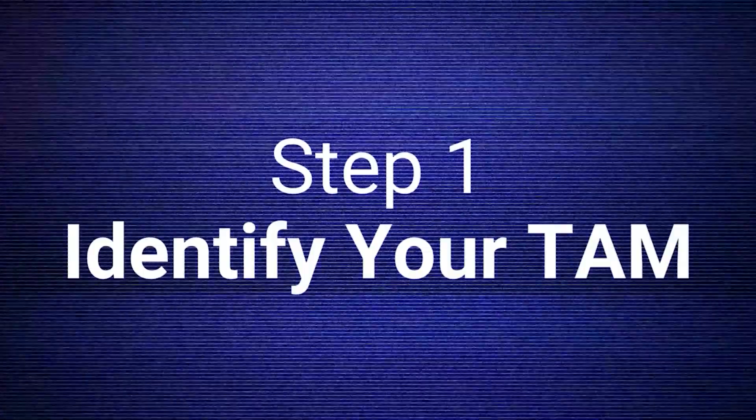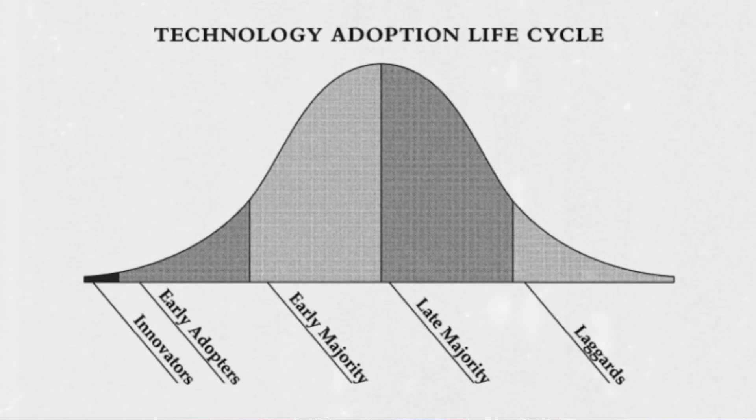The very first step is this: you need to separate your ideal first users from your total addressable market, or your TAM. Your TAM refers to the maximum potential your app will have in terms of reach within the market. One of the ways to think about your market as having different segments is by referencing the book Crossing the Chasm. Within this book, you'll learn about the technology adoption lifecycle — a bell curve — which illustrates that just because you've found someone who may be the right user for your app, it might not be the right time for them.